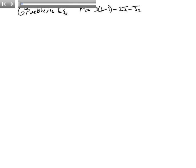Grubler's equation is very powerful. However, it should not be applied without some consideration or common sense, because sometimes it will generate the incorrect value for the degrees of freedom. When it does that, we call that a paradox — when Grubler's equation gives the wrong mobility or degrees of freedom.